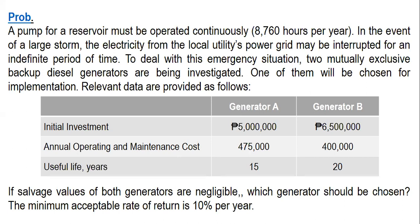One of the two generators will be chosen for implementation. Relevant data: the initial investment for Generator A is 5 million pesos, while for B it's 6.5 million pesos. Annual operating and maintenance cost is 475,000 pesos for A and 400,000 pesos for B. Useful life is 15 years for A and 20 years for B. Salvage values of both generators are negligible. The minimum acceptable rate of return is 10% per year.